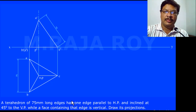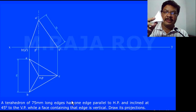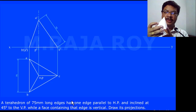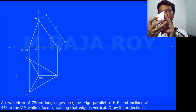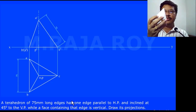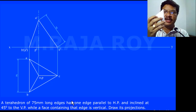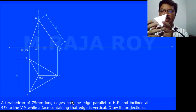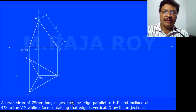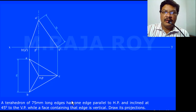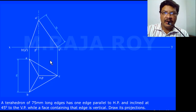In this problem, the tetrahedron's one edge is parallel to HP and the face containing that edge is vertical. This face being vertical means the axis is automatically inclined to HP. That means in this problem, the axis inclination is given indirectly, and this axis is inclined to HP.